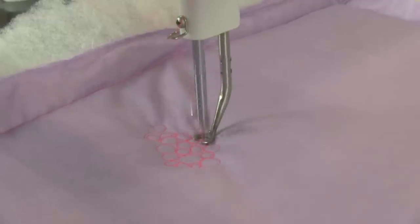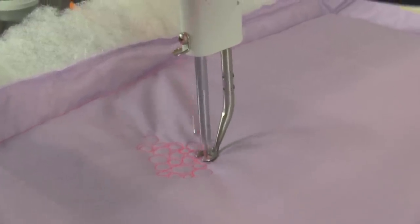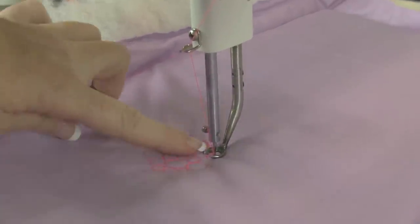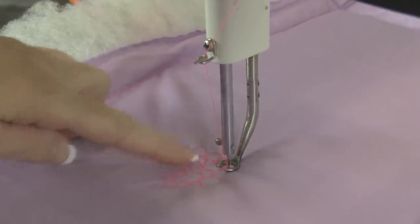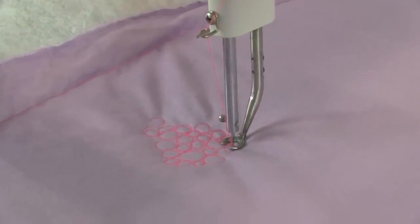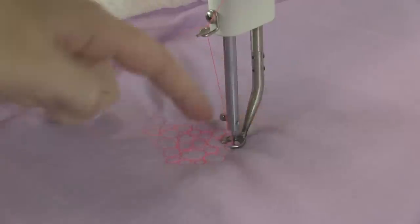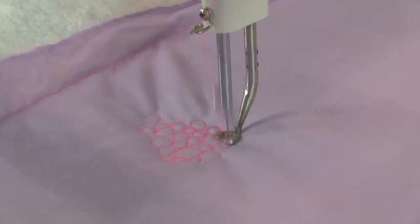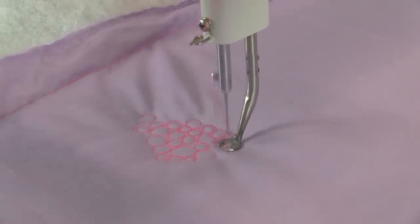You'll notice that I'm traveling along the edge of each circle as I stack them around. One of the things that makes that easier is I have an open-toed hopping foot on this machine. This APQS Millennium has interchangeable hopping feet. I have the low profile open-toed foot so I can get nice visibility, especially around applique.